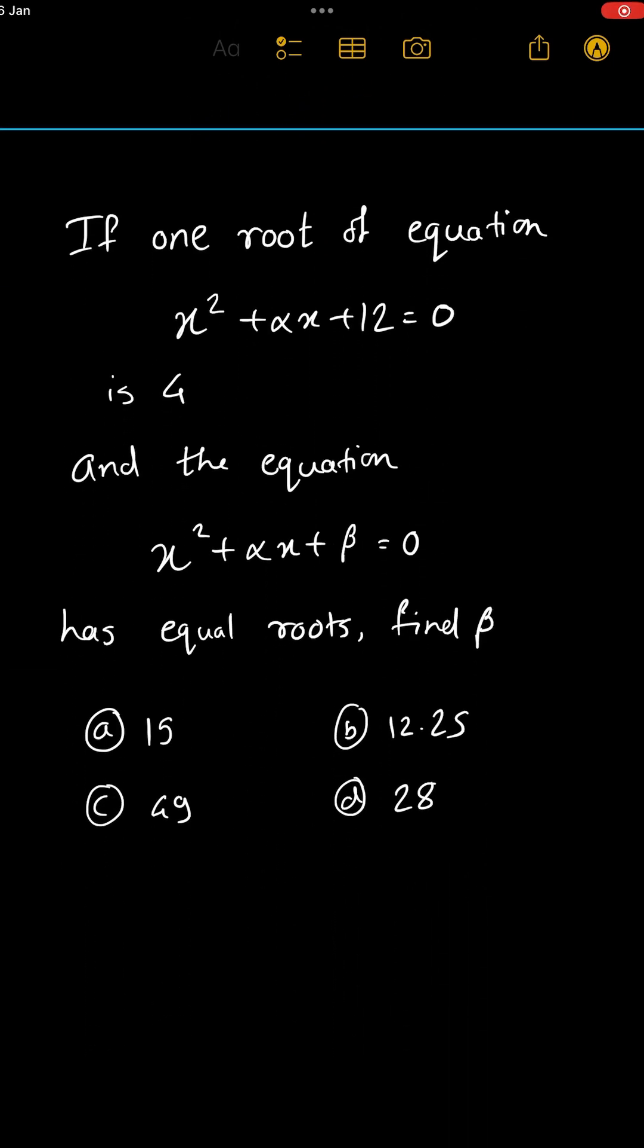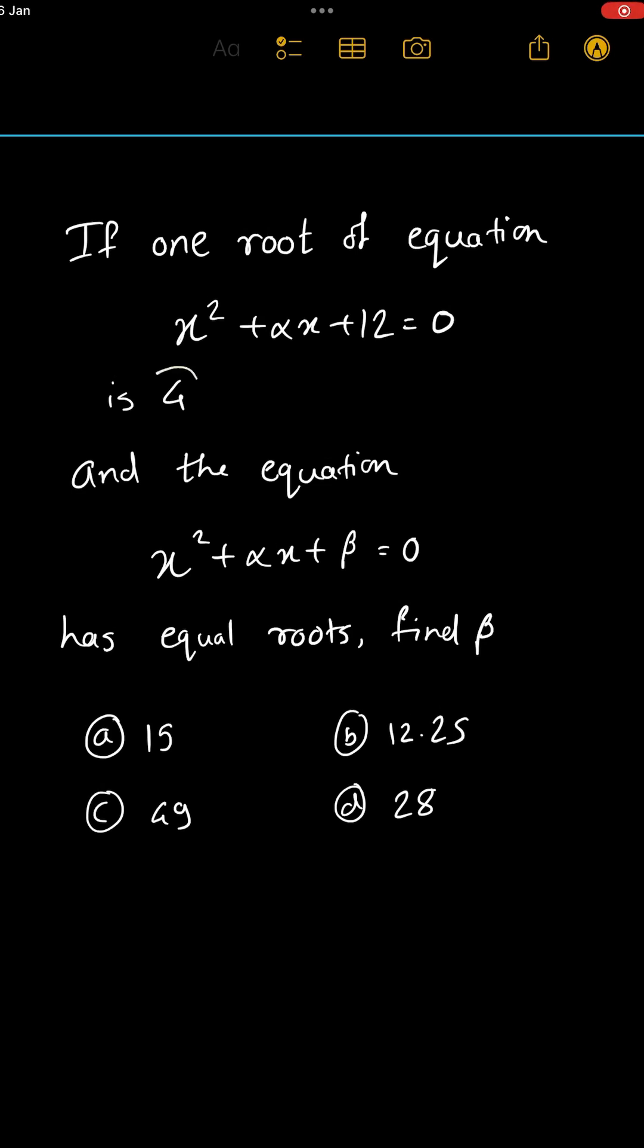Let's read. If one root of equation x² + αx + 12 = 0 is 4, and the equation x² + αx + β = 0 has equal roots, then find β. First try by yourself, then let's solve.